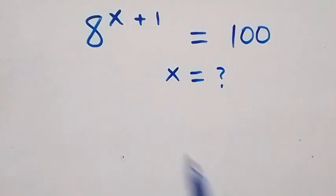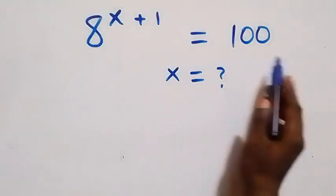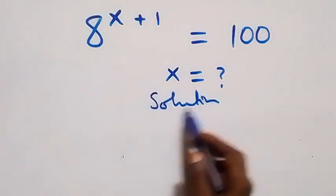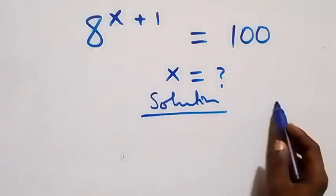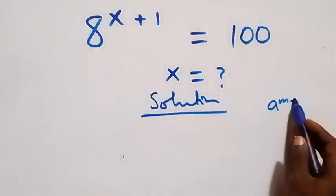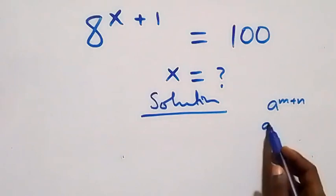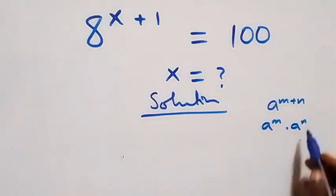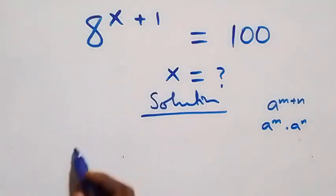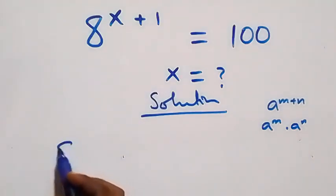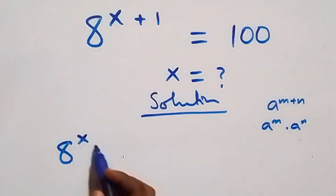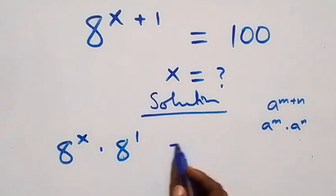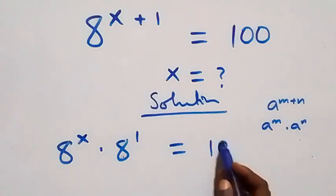Hello, you are welcome. How to solve this nice exponential equation. From what we have here, this follows when we have a raised to power m plus n, which you can rewrite as a raised to power m times a raised to power n. That is the same thing as a raised to power x times a raised to power 1, equals to 100.